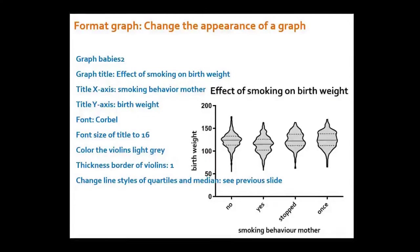Now we're going to look at babies 2 — or rather, you are going to do it yourself. You should change the title of the graph, the title of the x-axis, the title of the y-axis, the fonts, make the title bigger, change the color of the violins, change the thickness of the violin borders, and the line styles of the quartiles and median — so that you get something like the example shown.